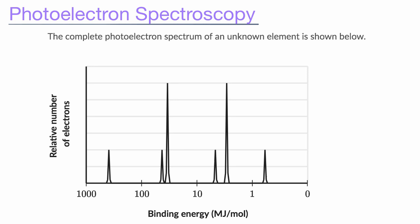In this video, we're going to introduce ourselves to the idea of photoelectron spectroscopy. It's a way of analyzing the electron configuration of a sample of a certain type of atom. And so what you'll often see — and you might see something like this on an exam — is a photoelectron spectrum that looks something like this.